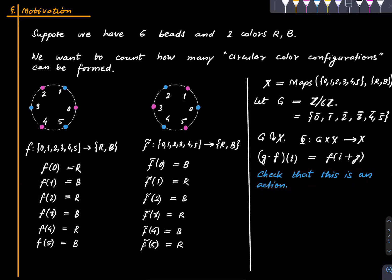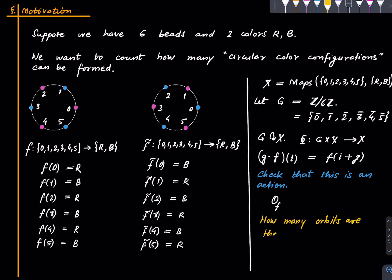The key point is that the orbit of a coloring f is precisely the identification class — the set of all colorings which we think of as the same as f. These are the colorings obtained by rotating f by 60°, 120°, 180°, and so on. So what we are really asking is: how many orbits are there? That is precisely the number of distinct colorings up to rotation.